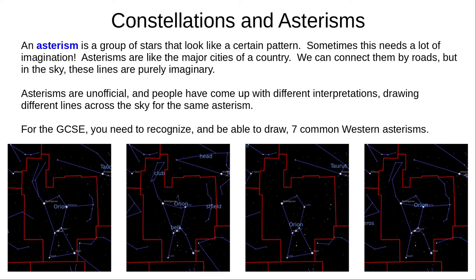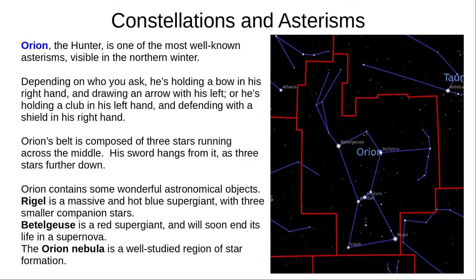For the GCSE, you need to know, recognise, and be able to draw seven common Western asterisms. Orion, the hunter, is one of the best known asterisms, easily visible in the northern winter. Some people say he's holding a bow and arrow, others say it's a shield and club. Orion's belt is a smaller asterism within Orion, of three stars in the middle of his body, and three stars lower down show his sword hanging from it.